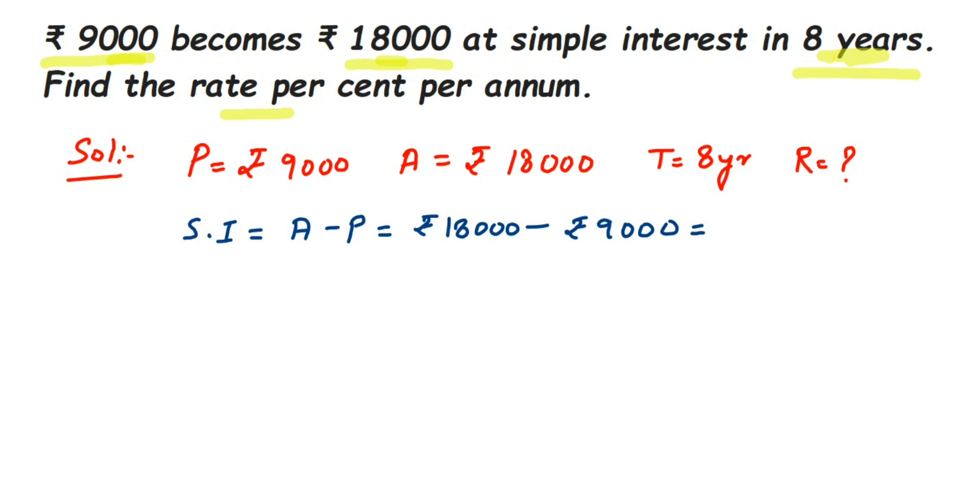Now I have to find out rate, and we directly have a formula for rate, which actually comes from the simple interest formula. So rate is equal to simple interest multiplied by 100, divided by the remaining two factors, which is principal multiplied by time. We know every value, we have...